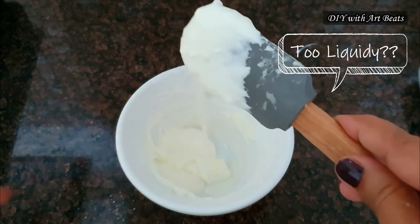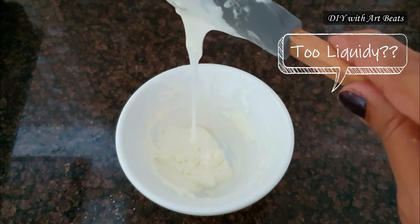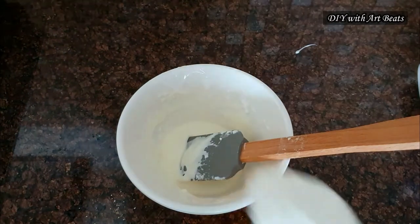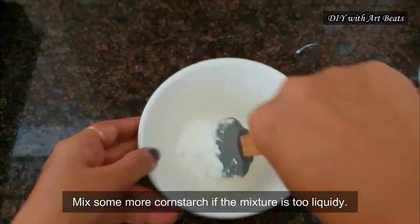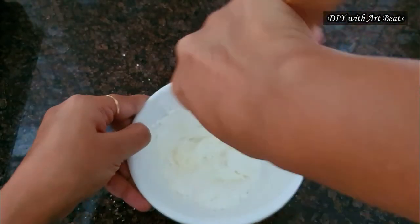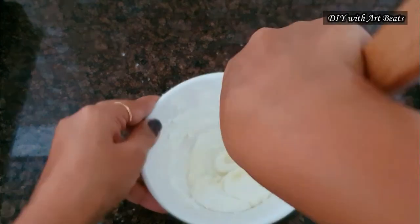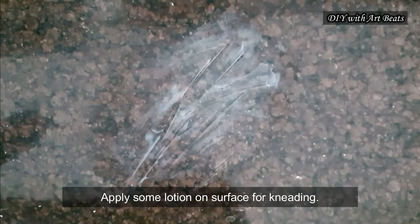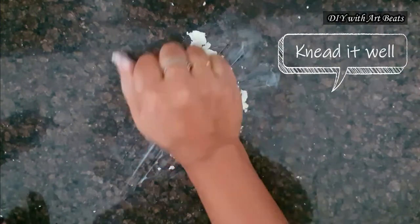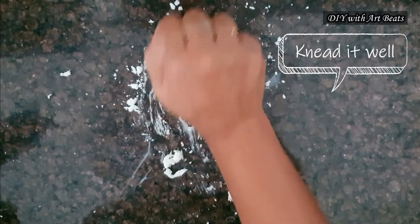As you can see my mixture looks too liquidy. So I am going to add some more cornstarch in this and mix it again. This recipe is quite flexible so you can vary its measurements according to its consistency. Now apply some lotion on the surface and start kneading till it gets a smooth texture.